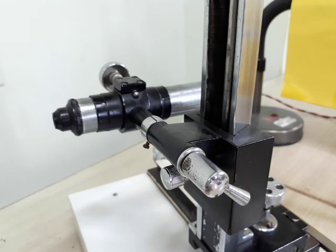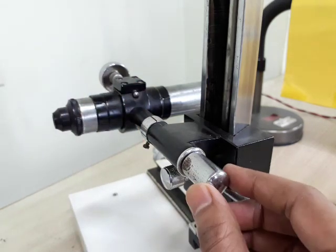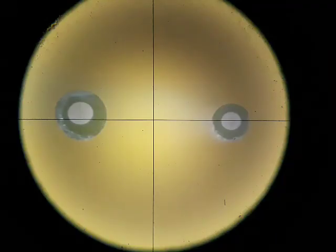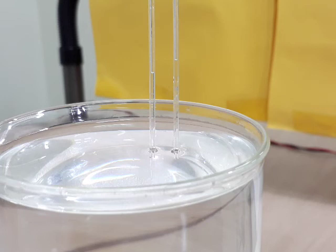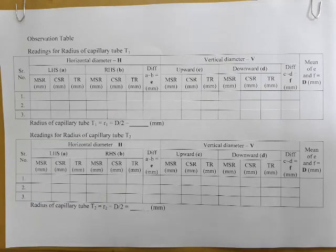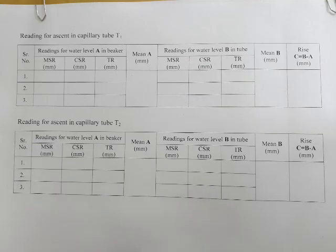We will make the microscope tube horizontal with the help of the Sewell screw arrangement. In this experiment, with the help of the travelling microscope, first we will find the diameters of the inner cross sections of the capillary tubes. Then the capillary tube will be slightly dipped in water and the water will rise in the capillary tubes. We will get the height of water in the capillary tubes by taking the difference of water level in the beaker and that in the capillary tube. The observation tables to get the radius of capillary tubes and ascent in capillary tubes will look like this.